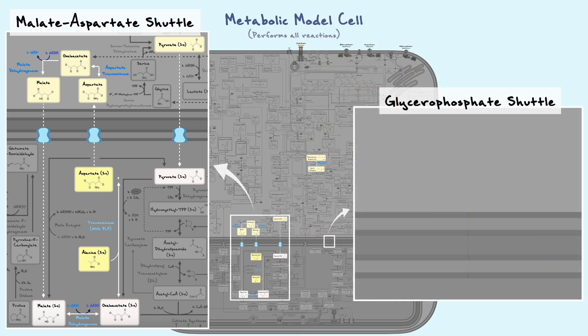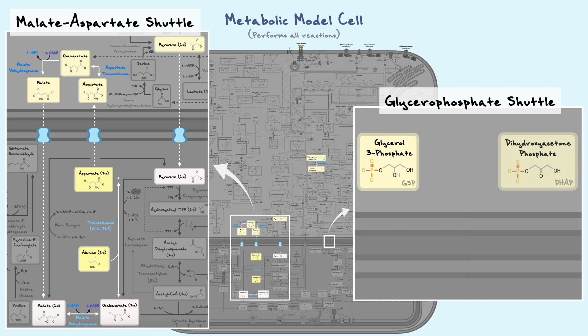Now, when it comes to the glycerophosphate shuttle, this mechanism is a little more straightforward to understand. One thing I want to point out about it, however, is that it is not illustrated in our metabolic map, so be mindful of that. In terms of this shuttle, there are two main substrates to consider: glycerol-3-phosphate and dihydroxyacetone phosphate, or simply DHAP.